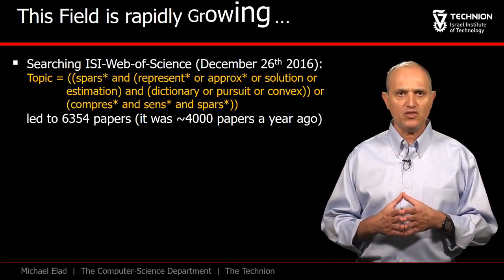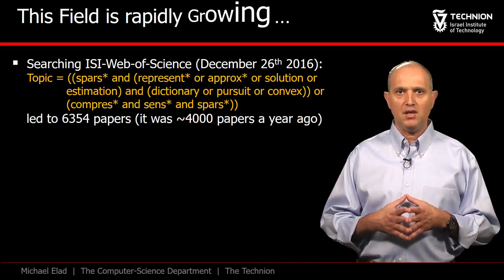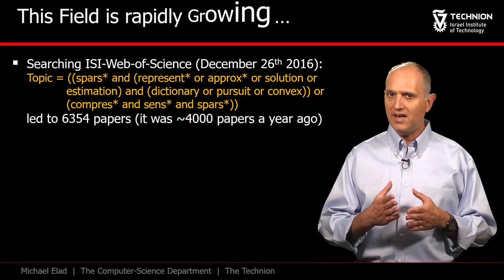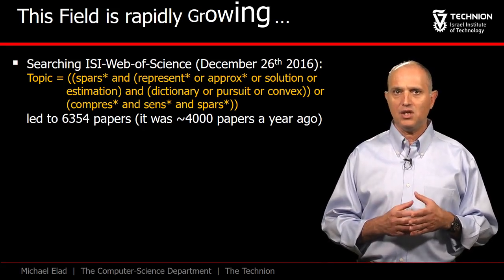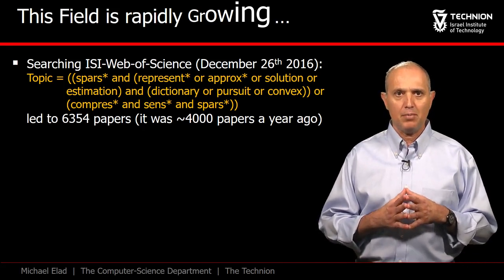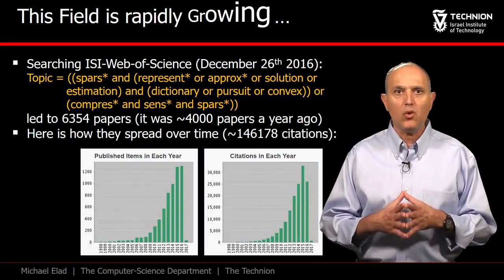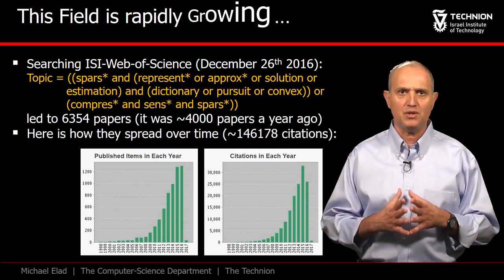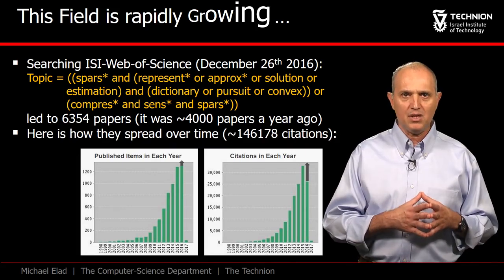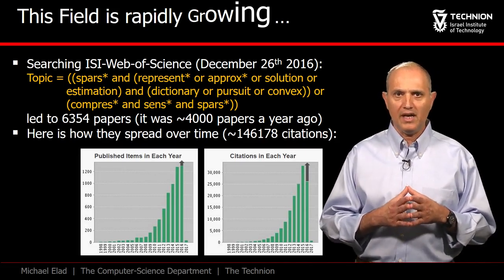Searching for relevant papers in Web of Science, we can learn of the trends in this field. The results we show here correspond to such a search performed towards the end of 2016. This search reveals more than 6,000 relevant papers published up to that date, organized in an exponentially growing pattern that reveals the growing interest in this field. Note that, due to delays in reporting papers, the rightmost bars are not complete and likely to grow further.